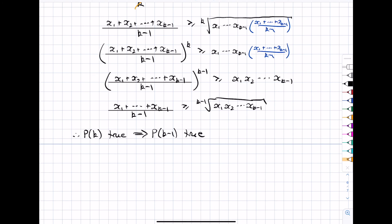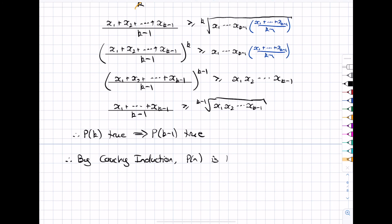We've completed all three steps of Cauchy induction. Therefore, by Cauchy induction, p of n is true for all n greater than or equal to 2, and that is the end of our proof.